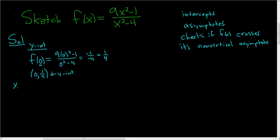Let's go ahead and find the x-intercepts. To find the x-intercepts, you set your entire function equal to 0. So 9x squared minus 1 over x squared minus 4 equals 0. To solve this equation, we can multiply both sides by x squared minus 4. These cancel, and so we end up with 9x squared minus 1 equals 0.